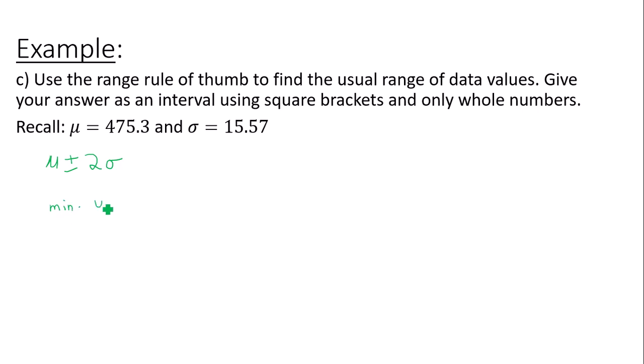So minimum usual value would be mu minus two times sigma. That's 475.3 minus two times 15.57. Plug this into your calculator and you will get 444.16. So the minimum usual value of games that you would win would be 444.16.